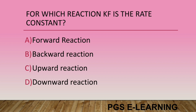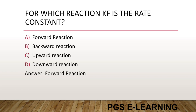For which reaction GF is the rate constant? Option A, forward reaction. Option B, backward reaction. Option C, upward reaction. Option D, downward reaction. Correct answer is forward reaction.